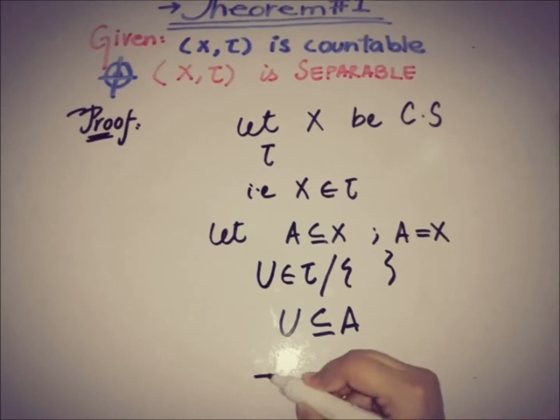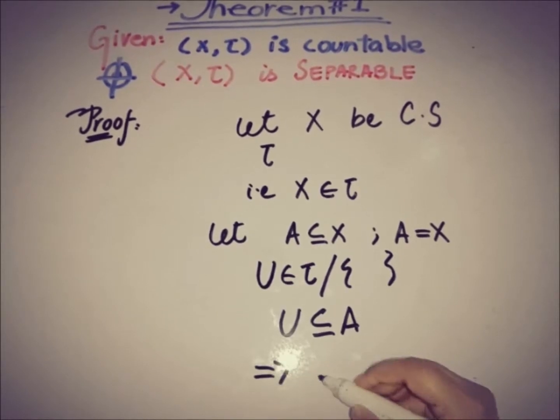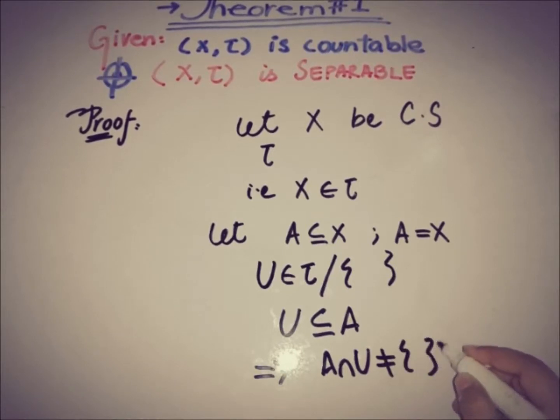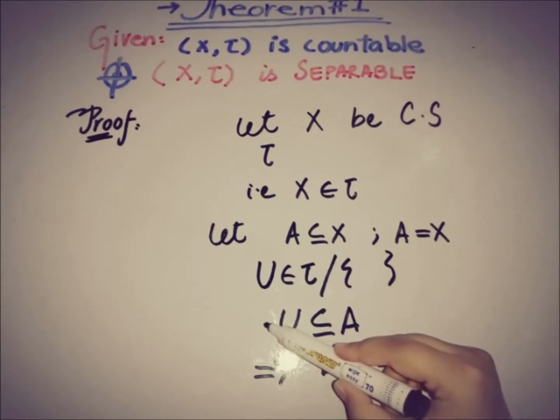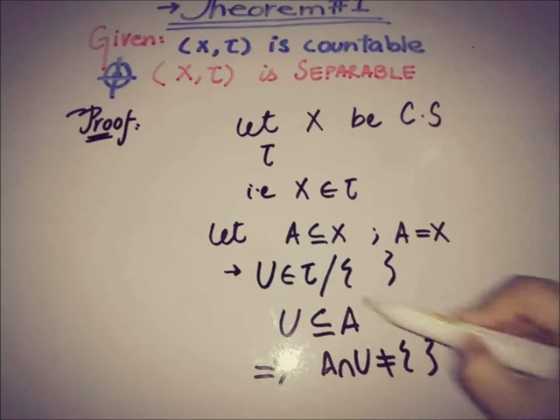Therefore, we can write that this implies that A intersection with U is not equal to empty set, because we have a restriction here that every element of the topology other than the empty set we are considering, and all of such elements are the subset of A. This thing implies that intersection of A and all of the open sets is not empty.